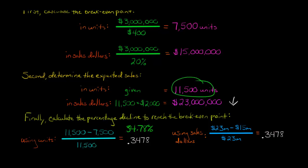So if we think we're going to sell 11,500 units, well, if we sell 30% less than that, we're still making money. If we sell 40% less than that, or 35%, then we're actually losing money. So this is what this is telling us. This is our margin of safety percentage.